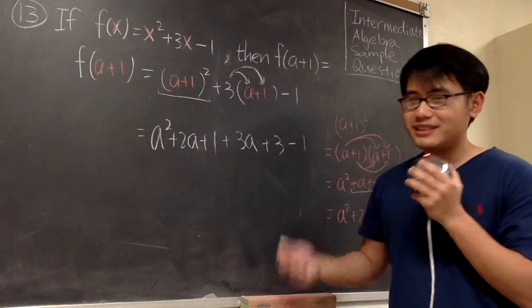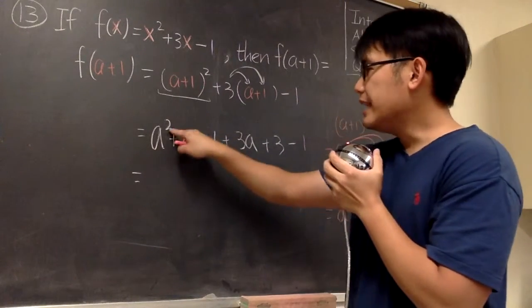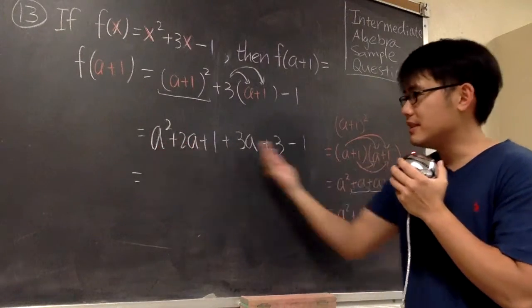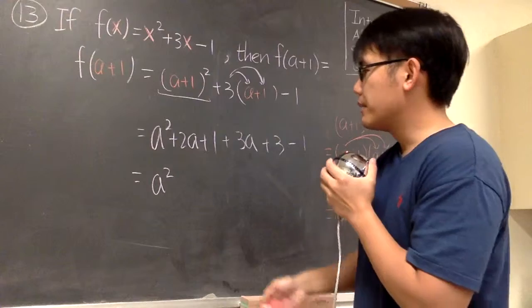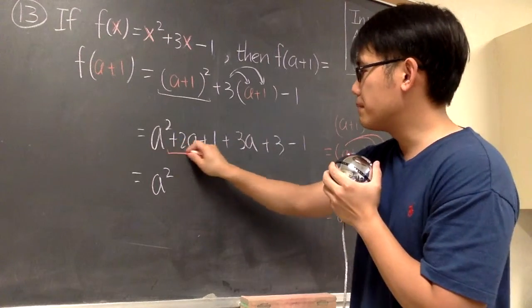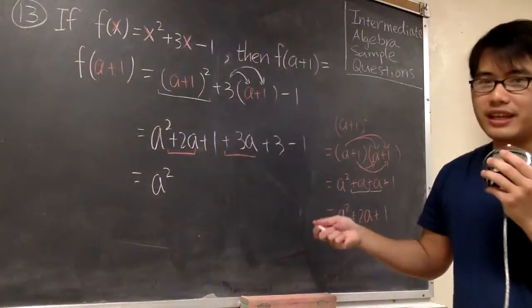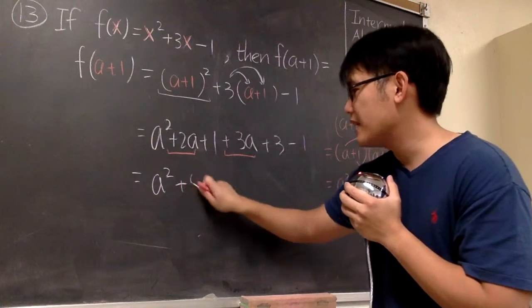Now we will have to combine the terms. The a² is just a², because there's no other a² term. So write down the a², but then for the a parts, we have the plus 2a and plus 3a. Together we have plus 5a.